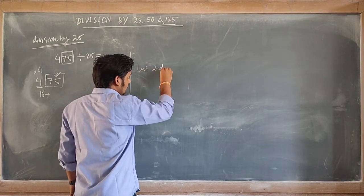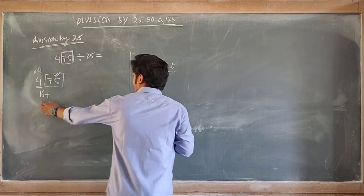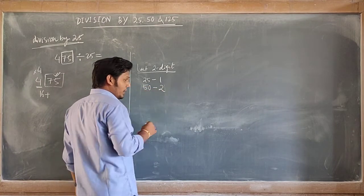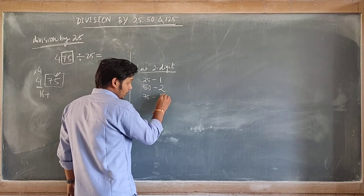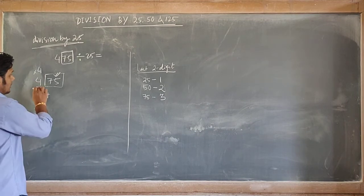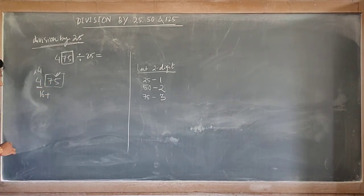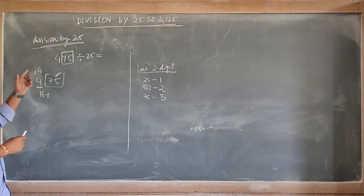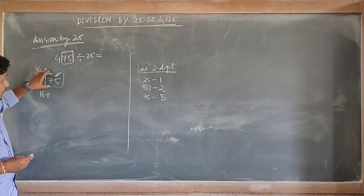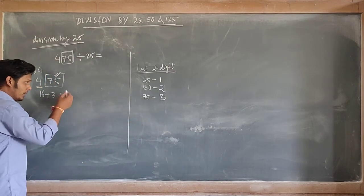If the last two digits are 25, you have to add 1 to the product. If the last two digits are 50, you add 2. If the last two digits are 75, you add 3. So for 475, we separate 400 and 75. 400 means 4 times 100, so we multiply 4 by 4 to get 16. Then 75 means 25 can be taken 3 times, so we add 3. The answer is 19.